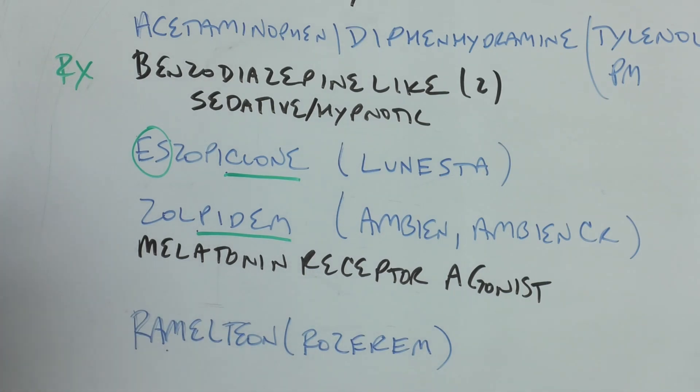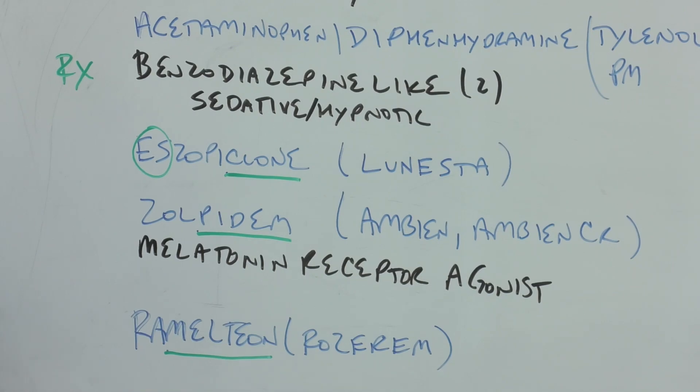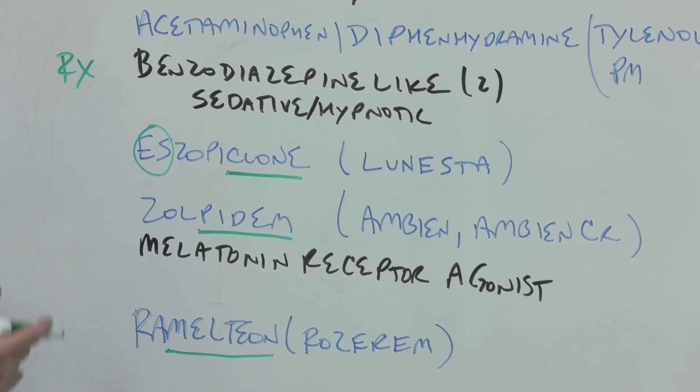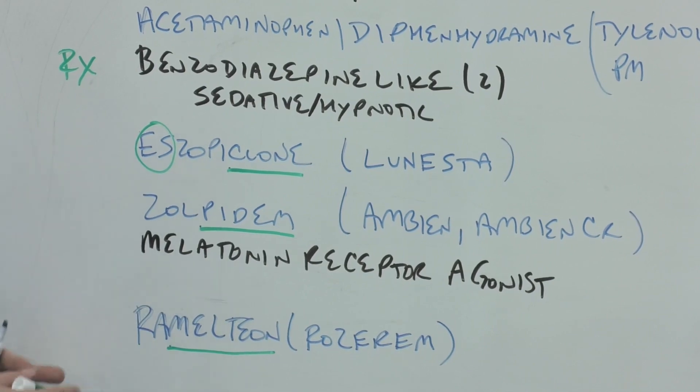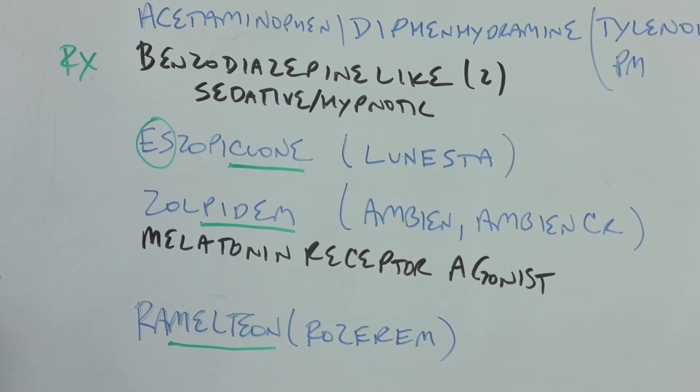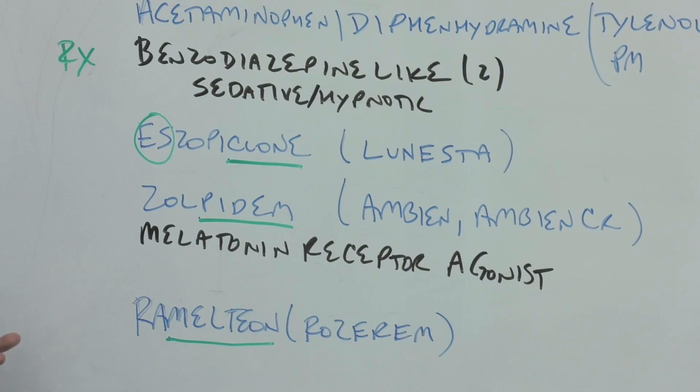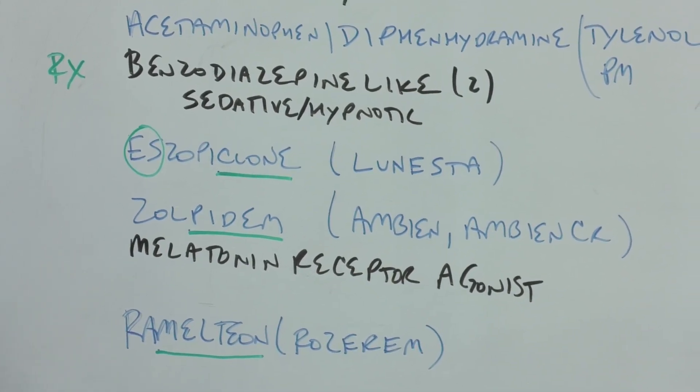Melatonin receptor agonist: ramelteon, the melteon is the stem and it looks like melatonin for a reason because it is a melatonin receptor agonist. You can think of Rozerem: rose rhymes with dose, REM for rapid eye movement sleep. Those are some OTC neuro drugs and sleep aids. Next we're going into antidepressants.